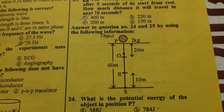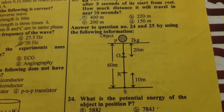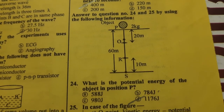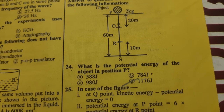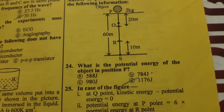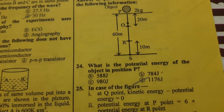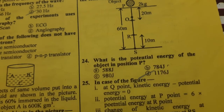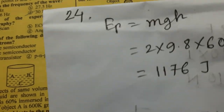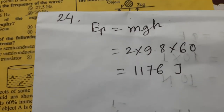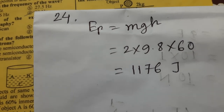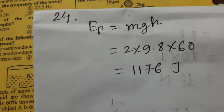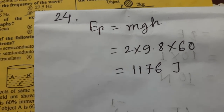A stem is given for questions 24 and 25. Question number twenty-four: what is the potential energy of the object at position P? Ep = mgh, where m = 2 kg, g = 9.8 m/s², and total height h = 60 m. The answer is 1176 joules.